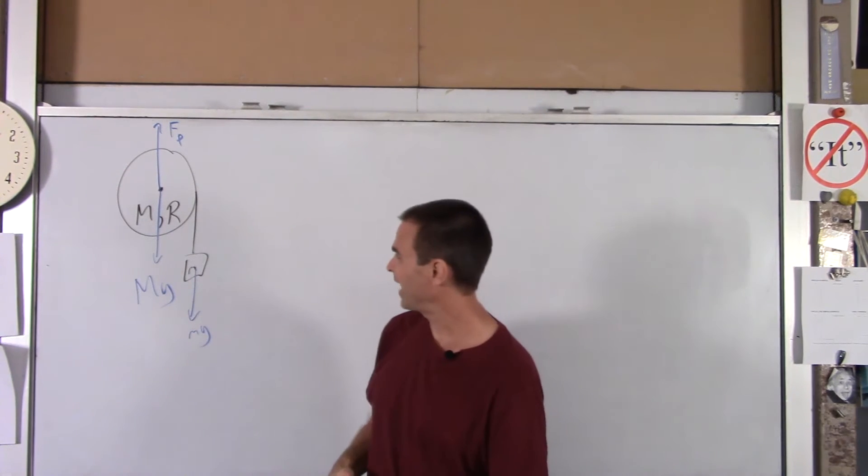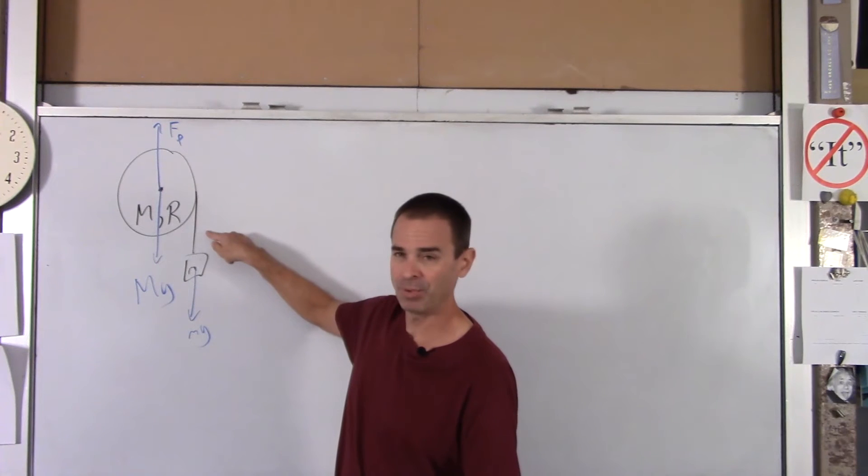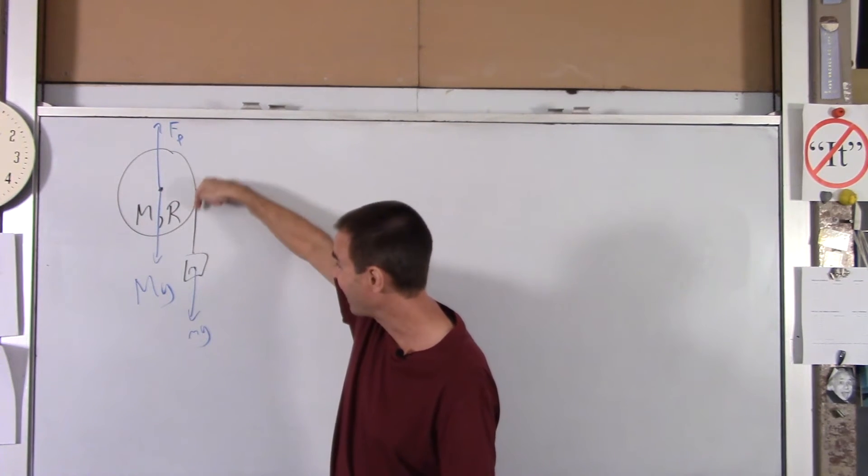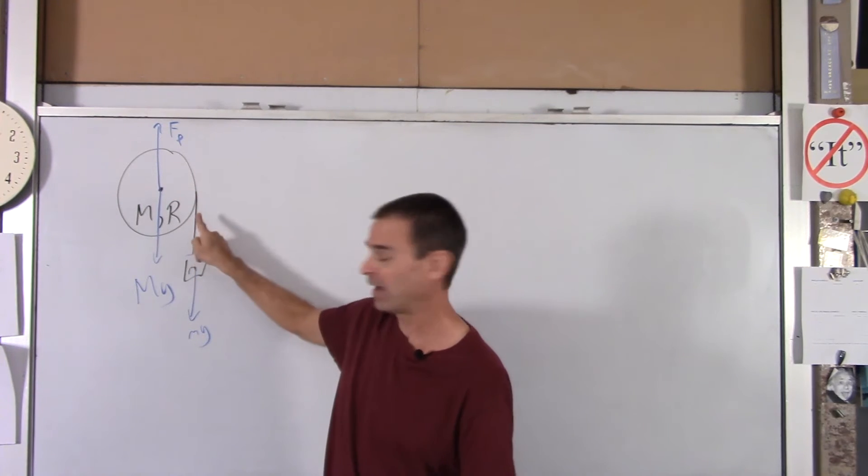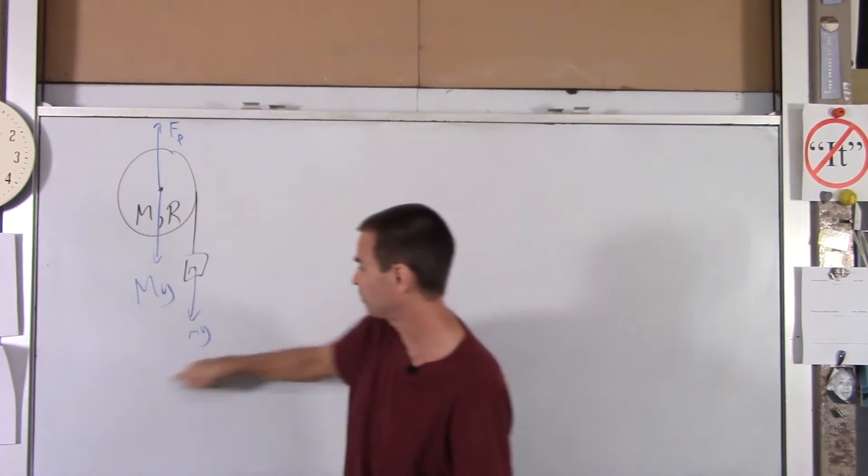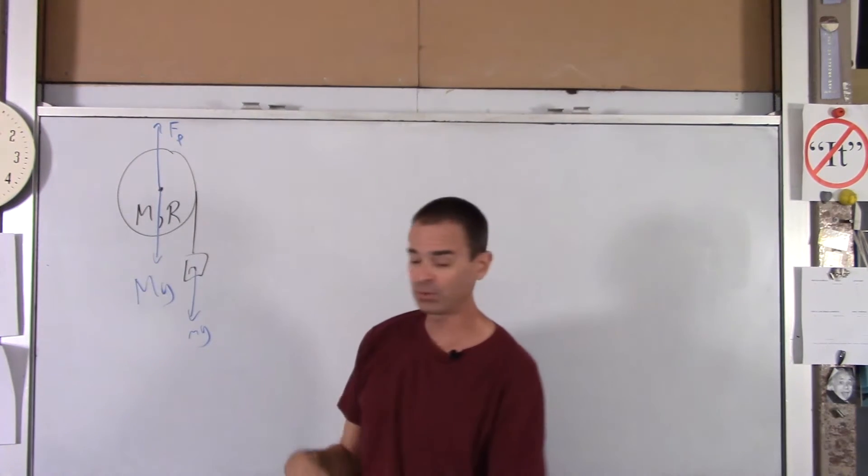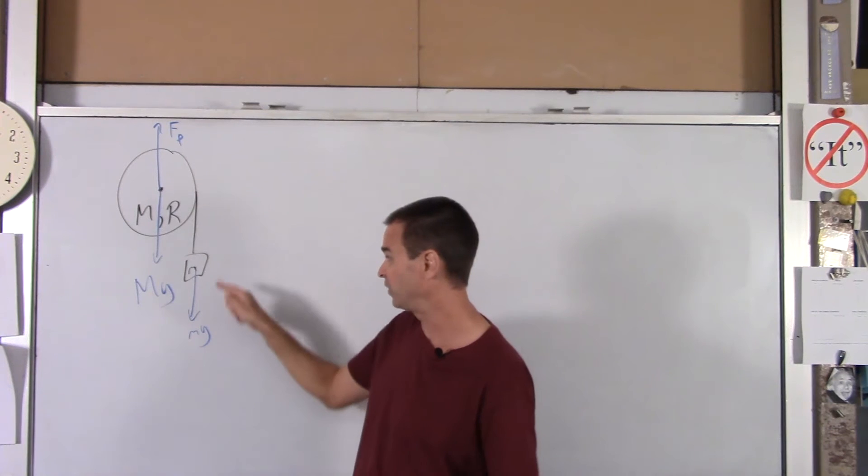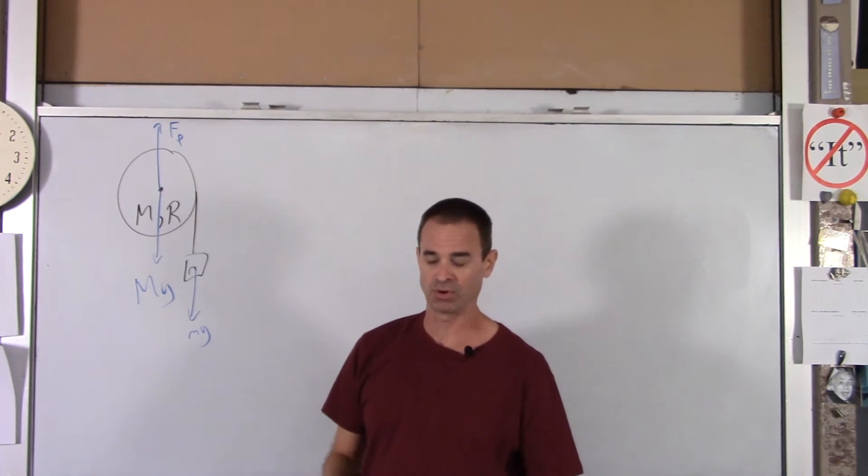And then the only other forces acting here is you've got tension. But that's an internal force. You've got this tension pulling down on the disk and up on the block. And so if you look at it as one big system, you draw a box around this entire system, that force is internal. It doesn't affect the system. It affects the individual pieces of the system, but not the system overall.